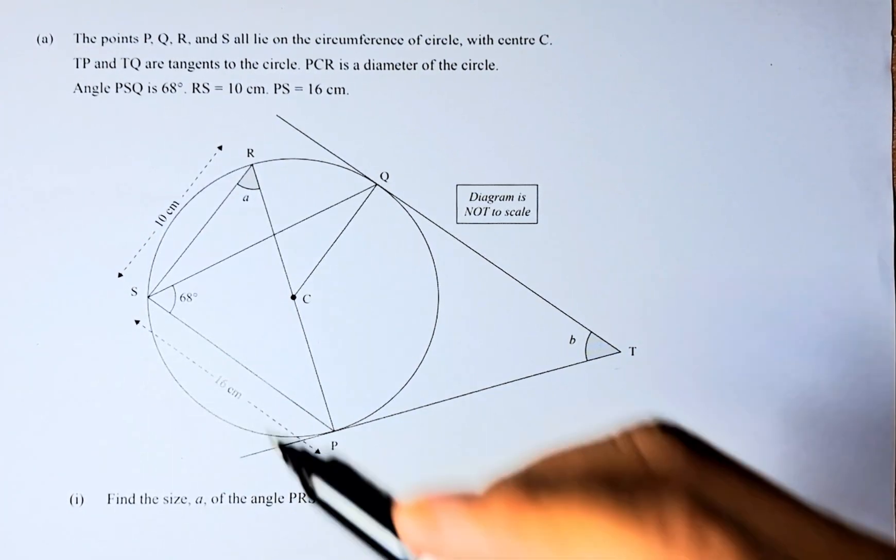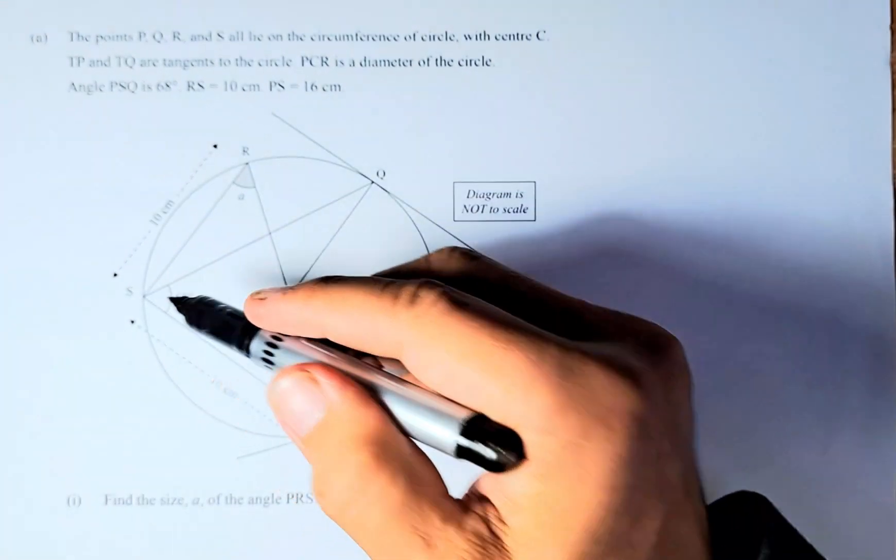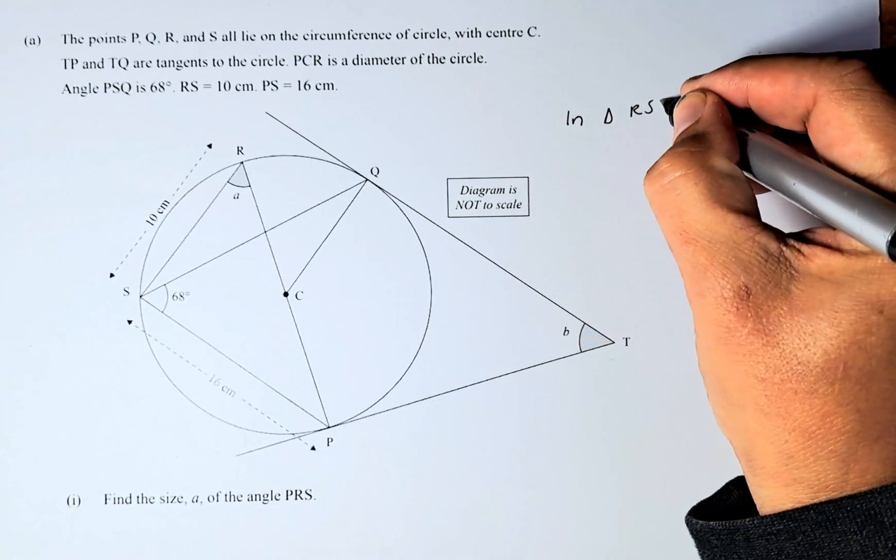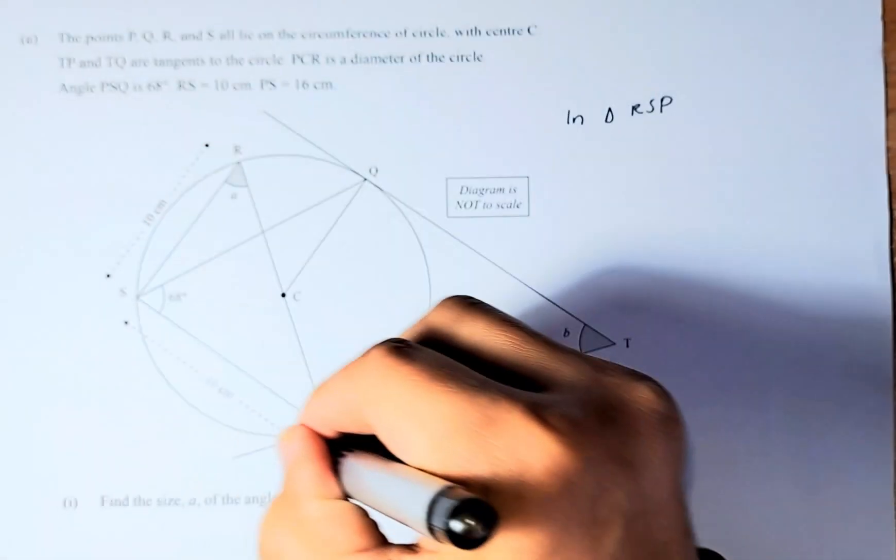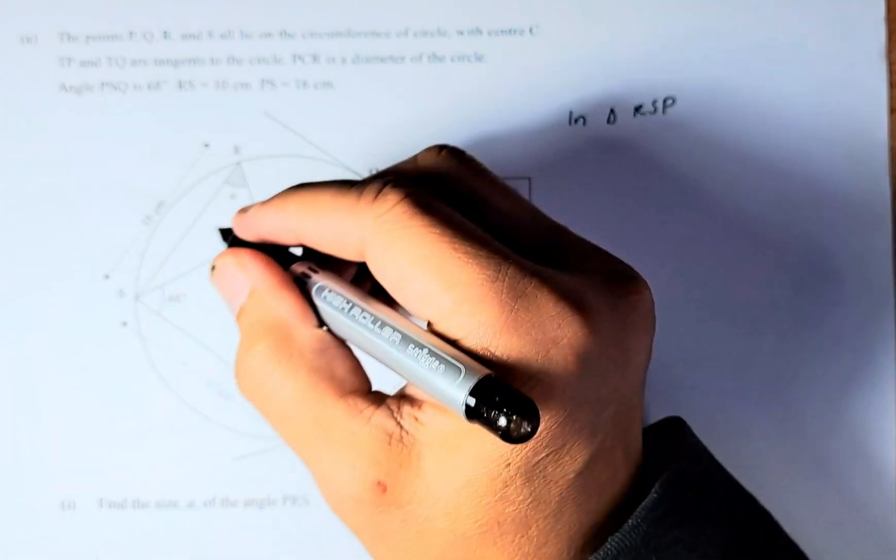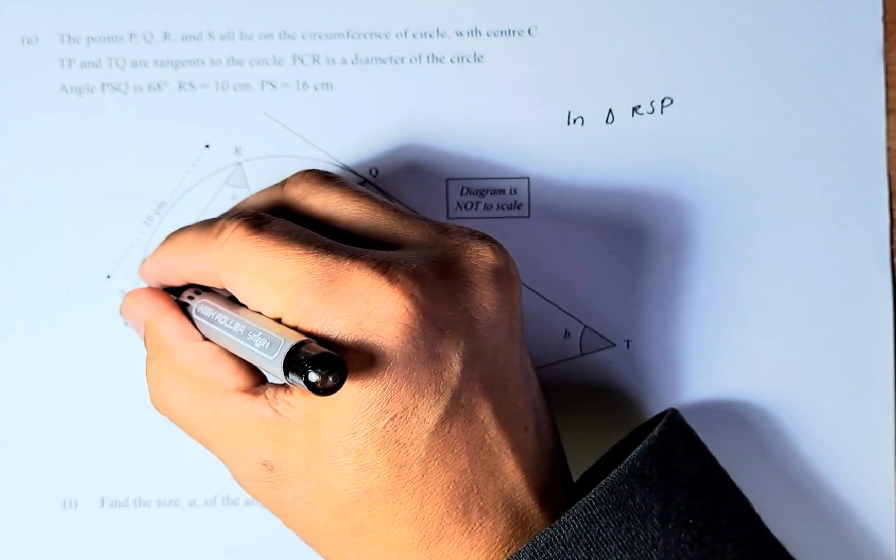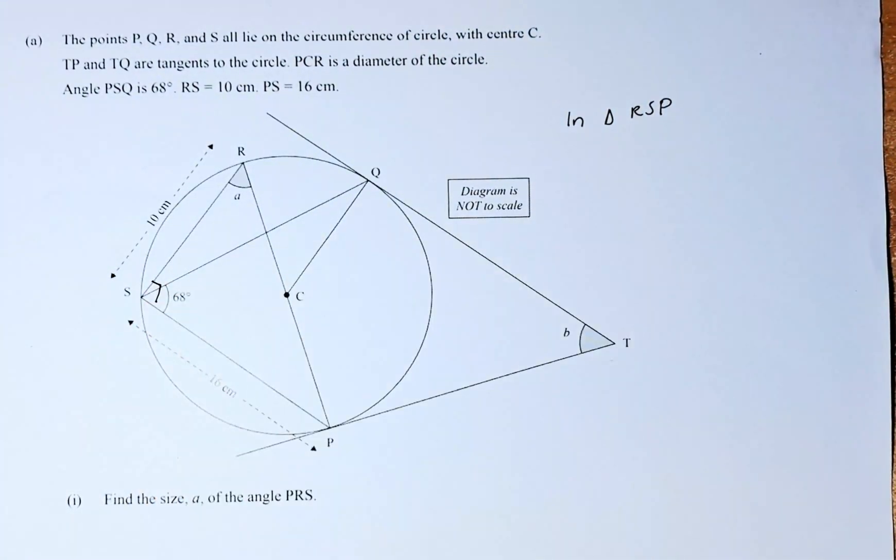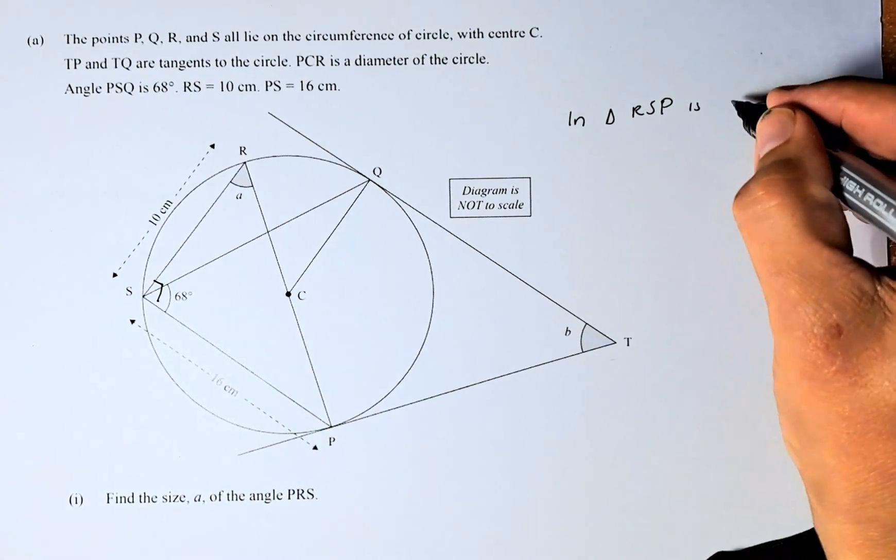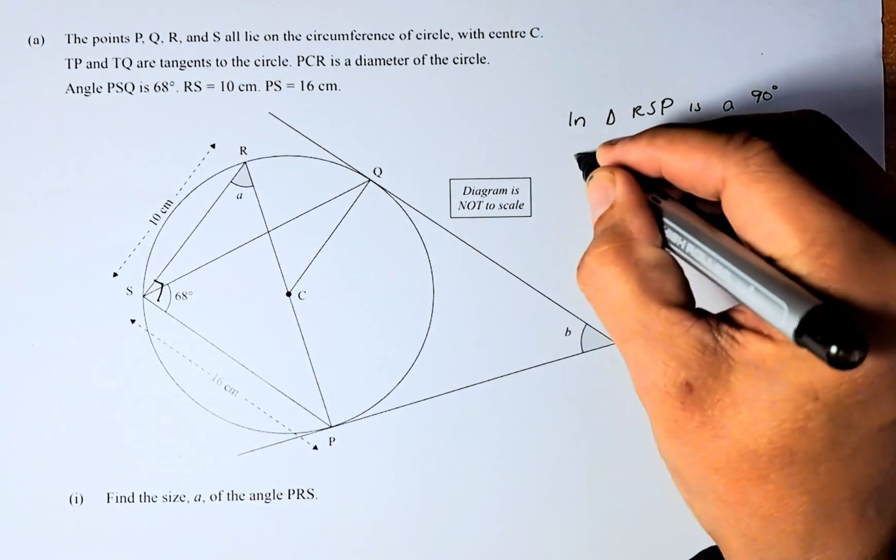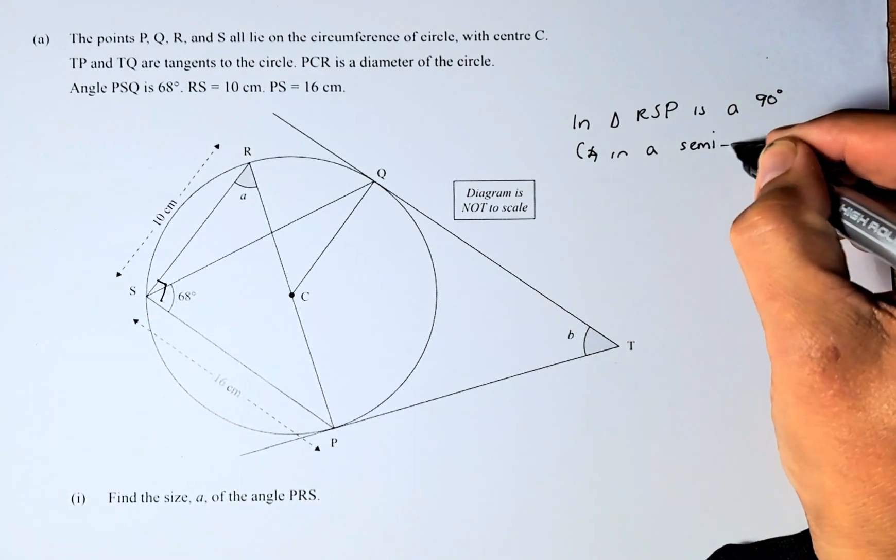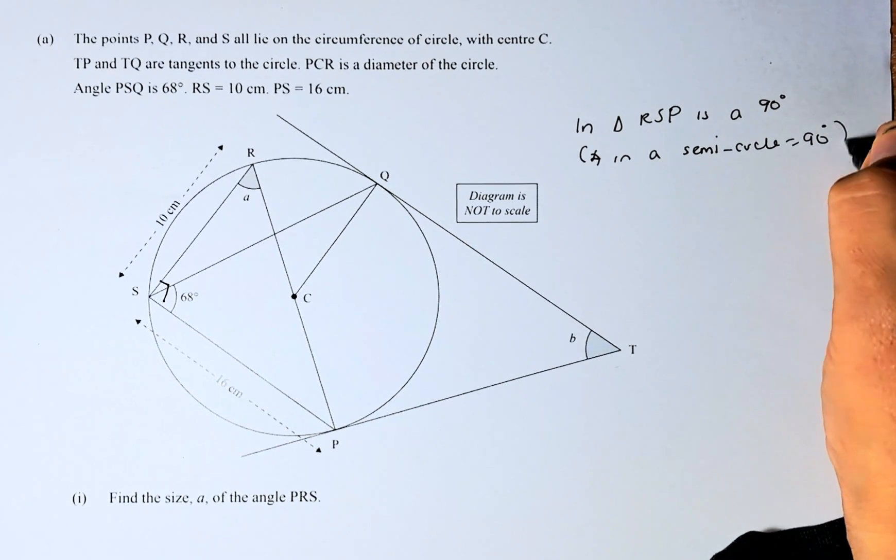Angle A, if you look at this triangle here, angle RSP, in triangle RSP, we can use straight ratio. This is a right angle triangle because this angle is in the center, so this tends to be a right angle triangle. That is an angle in a semi-circle, so triangle RSP is 90 degrees, because an angle in a semi-circle equals 90 degrees.